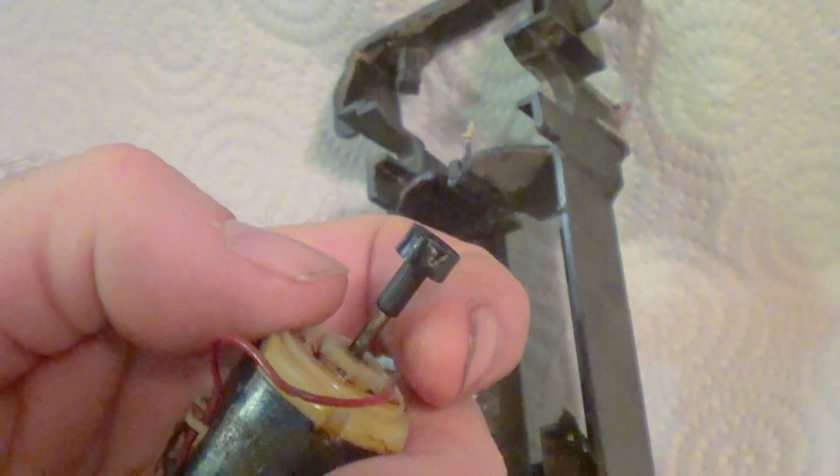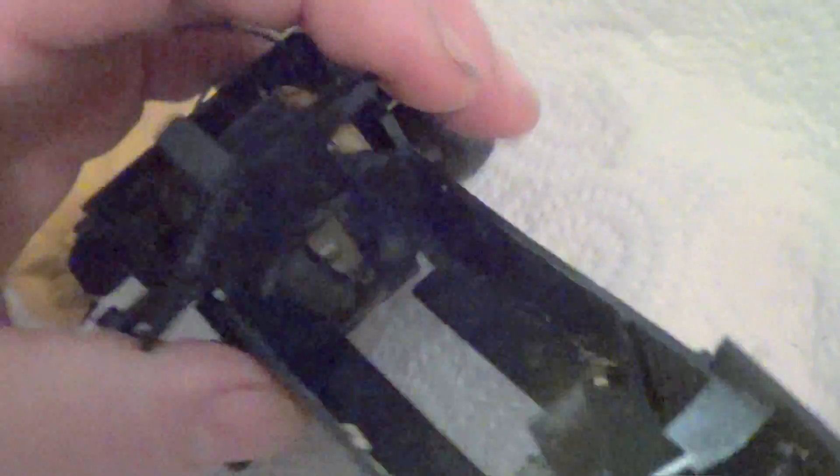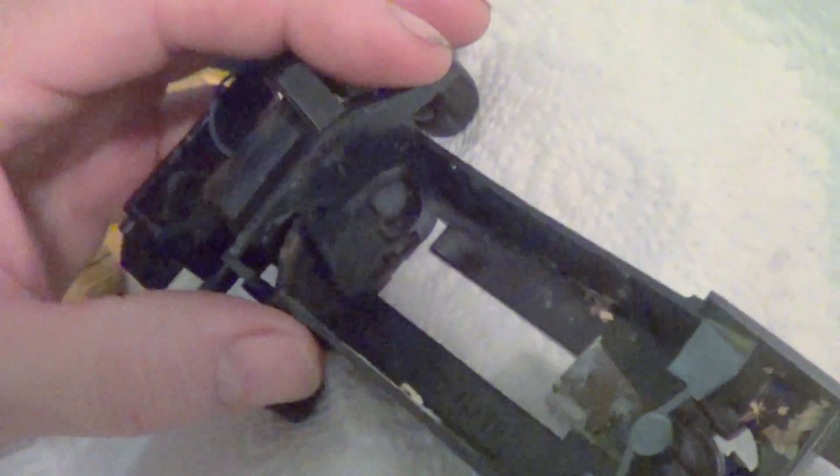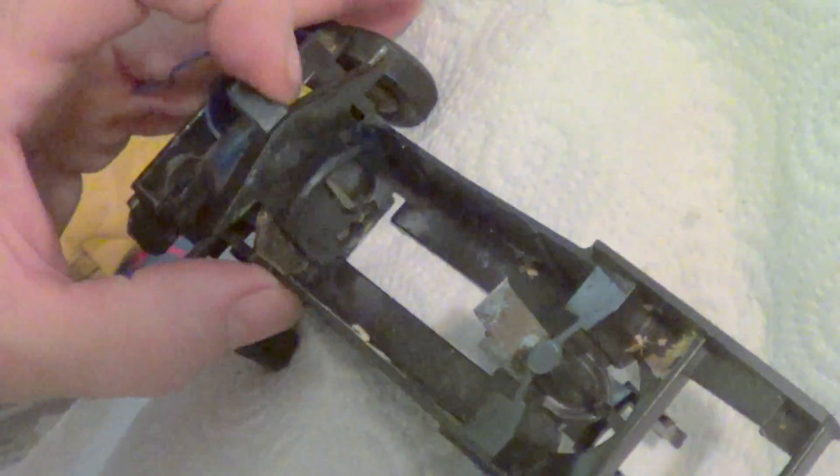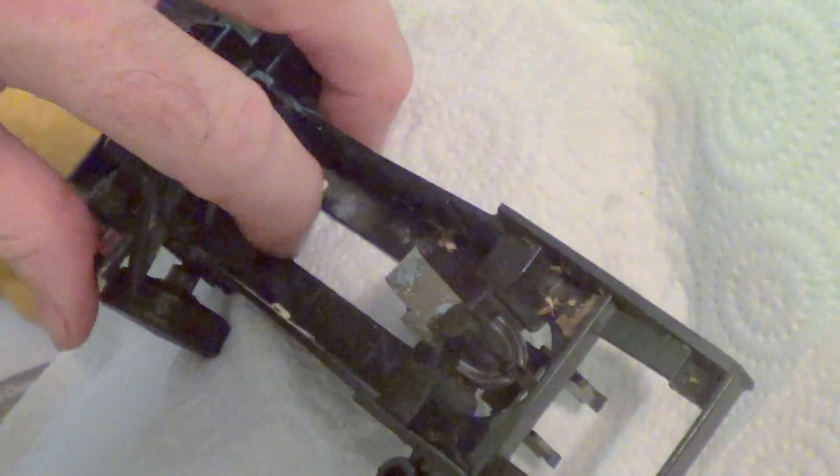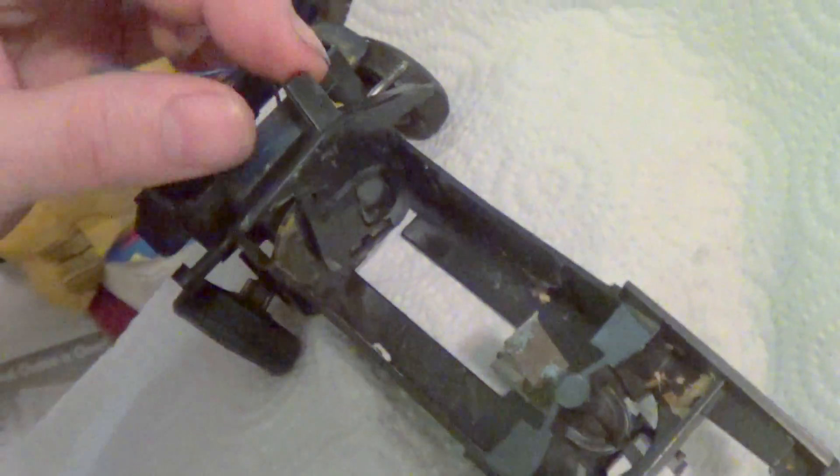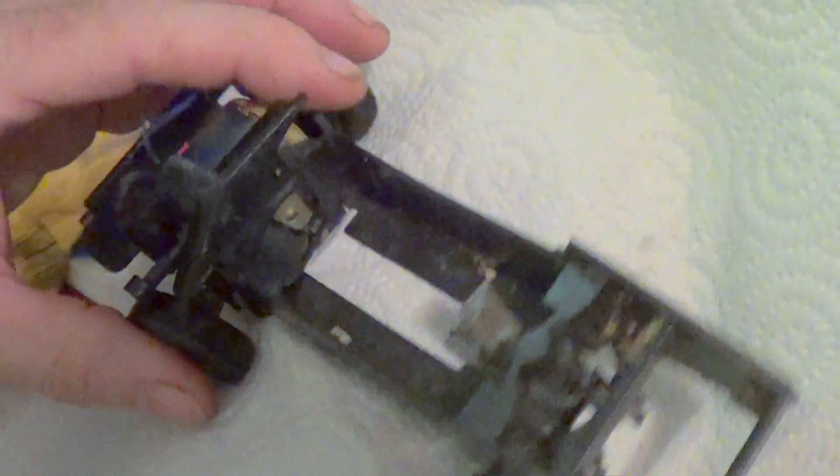There's the little speed changer deal you flip around. And how you turn the battery on and off is just this little gizmo over here - you flip it back and forth. There's where the terminal's exposed and that's it. That's how you turn it on and off.